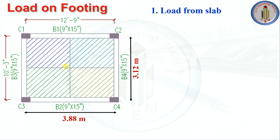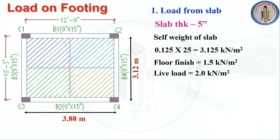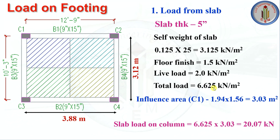First, let's calculate the load from the slab. Consider column C1 and its influence area. Slab thickness is 5 inches (0.125 m). Self-weight of slab = 0.125 × 25 = 3.125 kN/m². Floor finish load = 1.5 kN/m². Live load = 2 kN/m². Total load = 6.625 kN/m². The influence (tributary) area for C1 is 1.94 m × 1.56 m = 3.03 m². Slab load on C1 = 6.625 × 3.03 ≈ 20 kN.